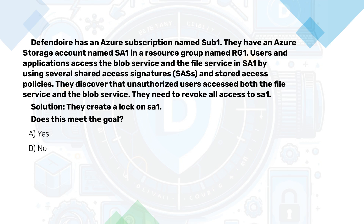We have an Azure subscription with a storage account in a resource group. Users and applications access the Blob service and the File service by using several shared access signatures and stored access policies. We discover that unauthorized users accessed both the File service and the Blob service. We need to revoke all access to the subscription. We create a lock on the subscription. Does this meet the goal?